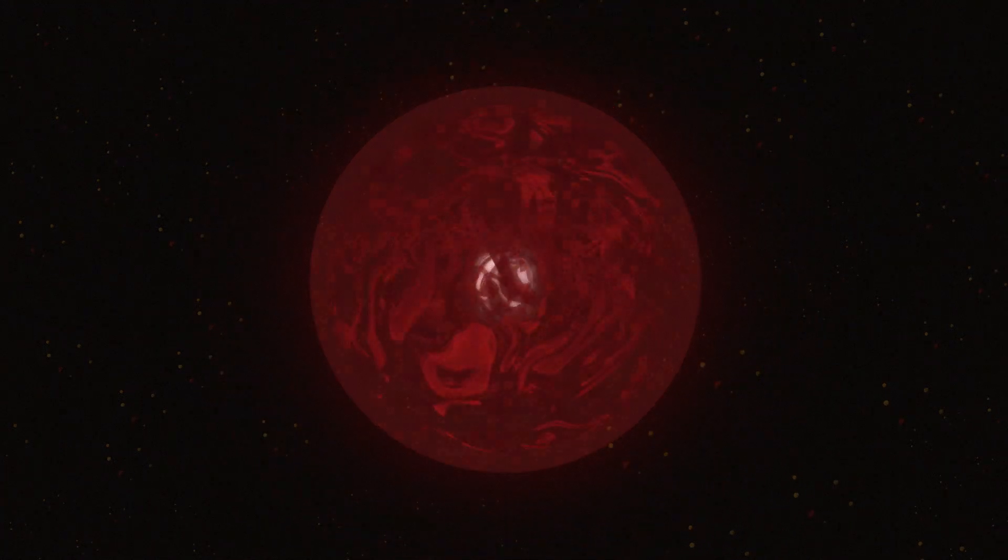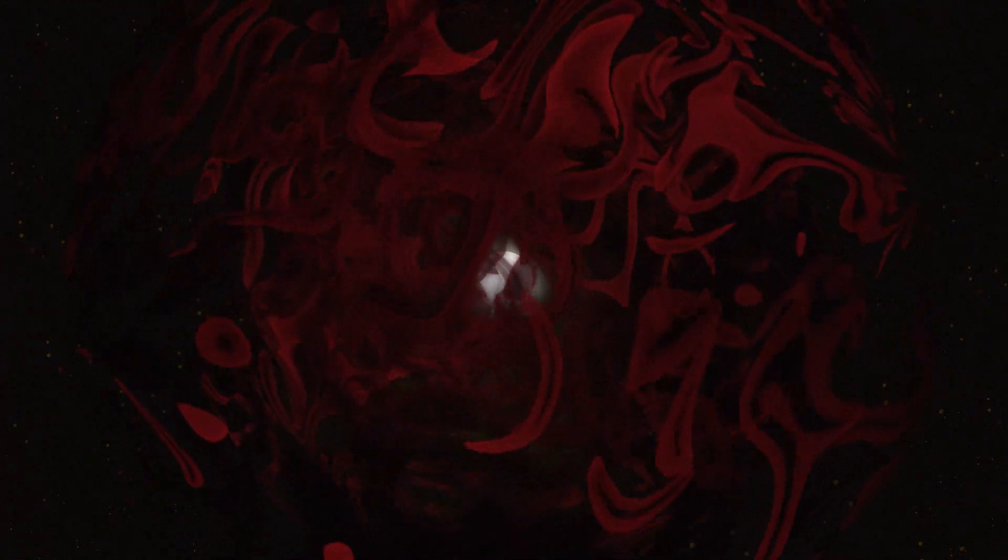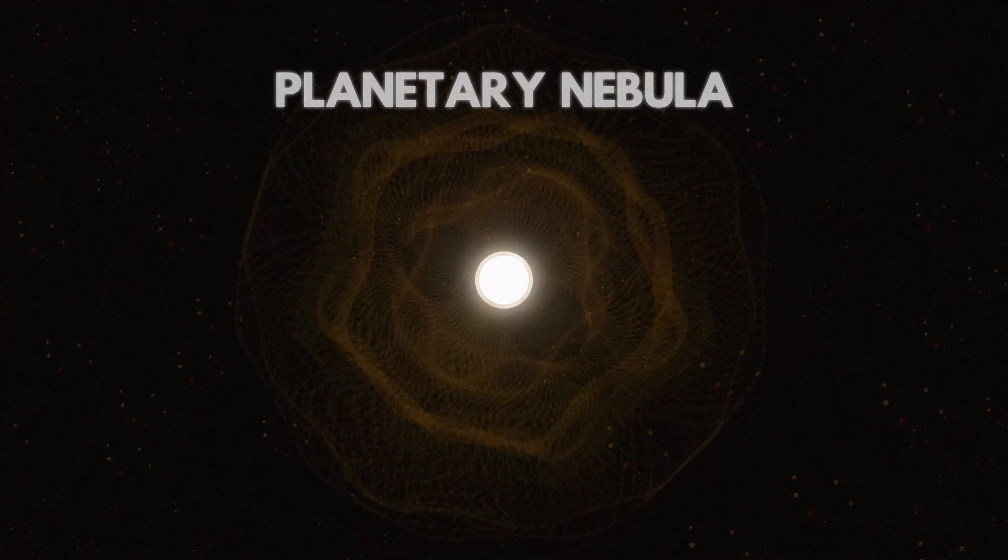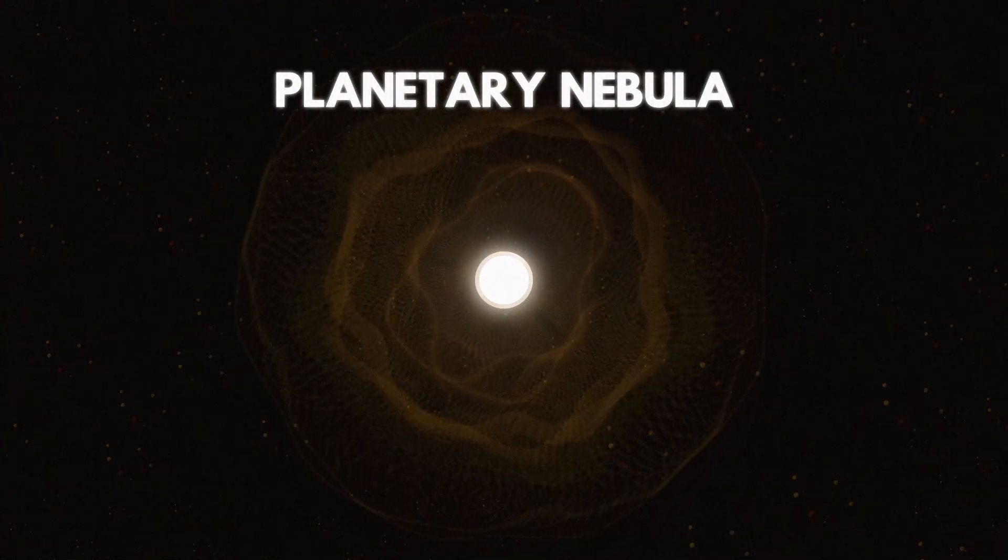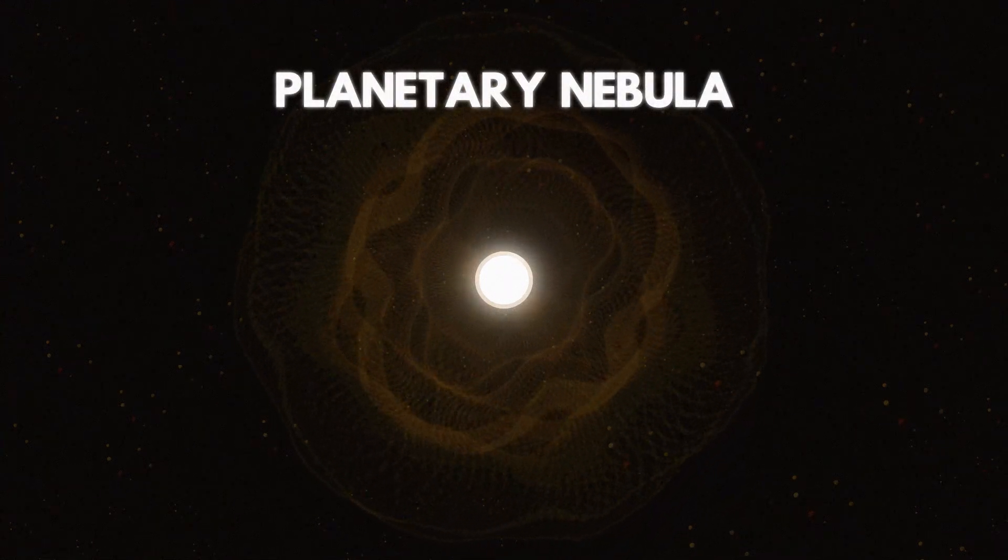Towards the end of the red giant phase, the star becomes highly unstable and starts to pulsate. The dying star will eject half of its mass of gas and dust into space. These outer layers will expand and produce a shell of hot gas known as a planetary nebula, leaving the core exposed.